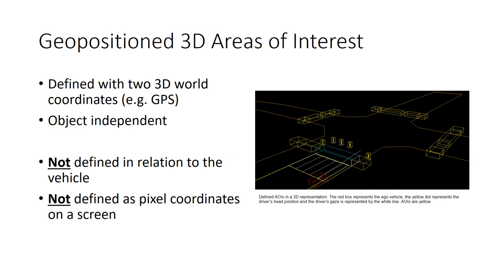Where they differ is the coordinate system in which the two opposing points are defined and their correlation to the world. While bounding boxes are usually defined in relation to the vehicle, 3D AOIs are defined in fixed world coordinates, for example GPS. This means they cannot move.